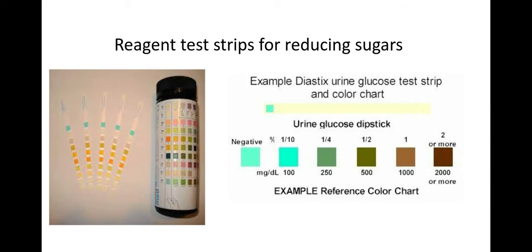The other test for reducing sugars is the reagent test strips and these work by dipping the test strips that look like this into a urine sample. Now if there is a certain concentration of glucose within that urine sample you would get a colour change and the colour change would indicate the concentration of glucose within the urine.